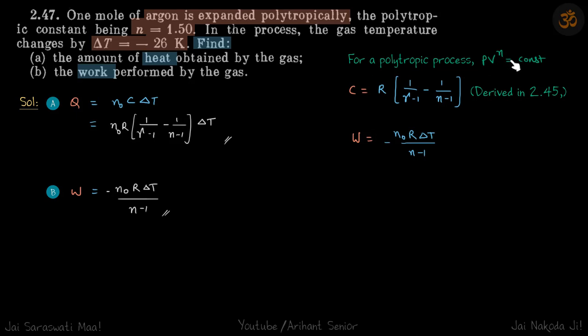PV raised power n is equal to constant. The molar heat capacity is given as this. And if you ever get confused and if you don't remember the formula, just to reassure yourself, always put n is equal to gamma.